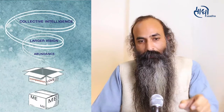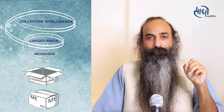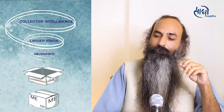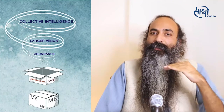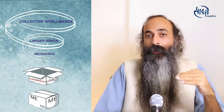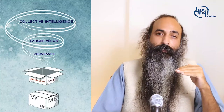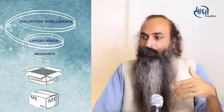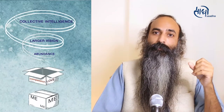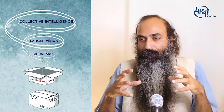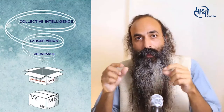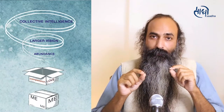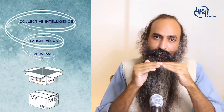If you look at the bottom of the image, there's a box that has 'me' written three ways. This is the first layer of our existence or the first layer of our expression. The smallest 'me' is the layer of our fears and our insecurities. Most of our expressions and decisions come from this layer of fear and insecurity. That is the basic layer of our expression.